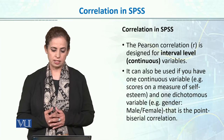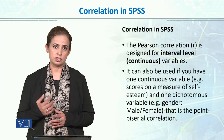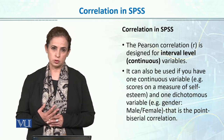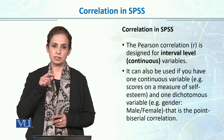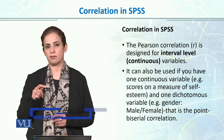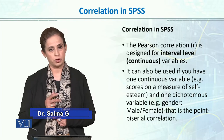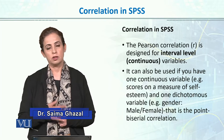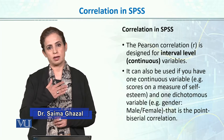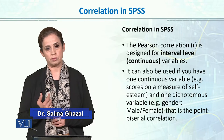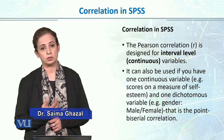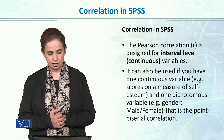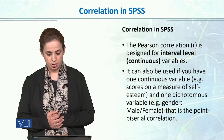Pearson correlation is designed for interval level continuous variables. We have X and Y variables. If we are using Pearson product moment correlation, it is necessary that our two variables are continuous scores or interval type data.